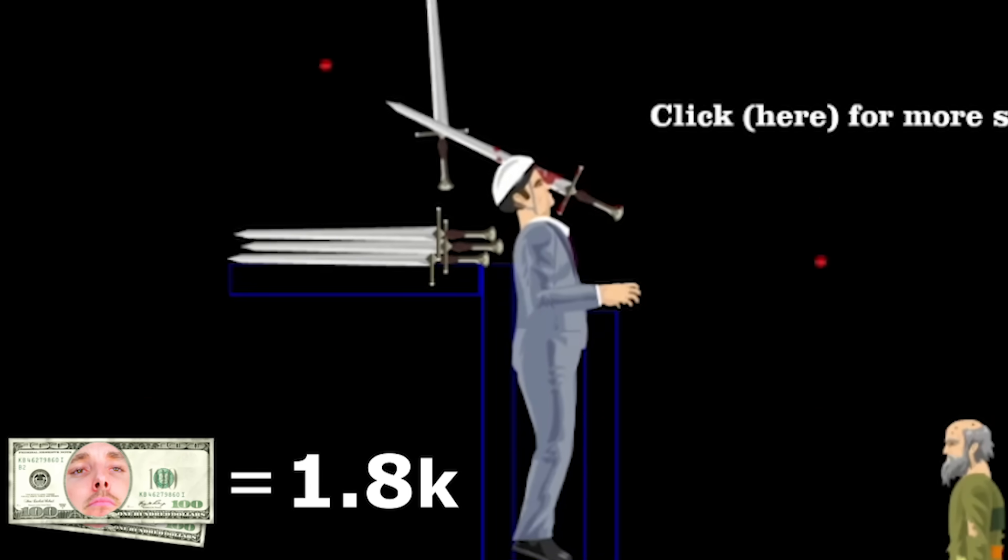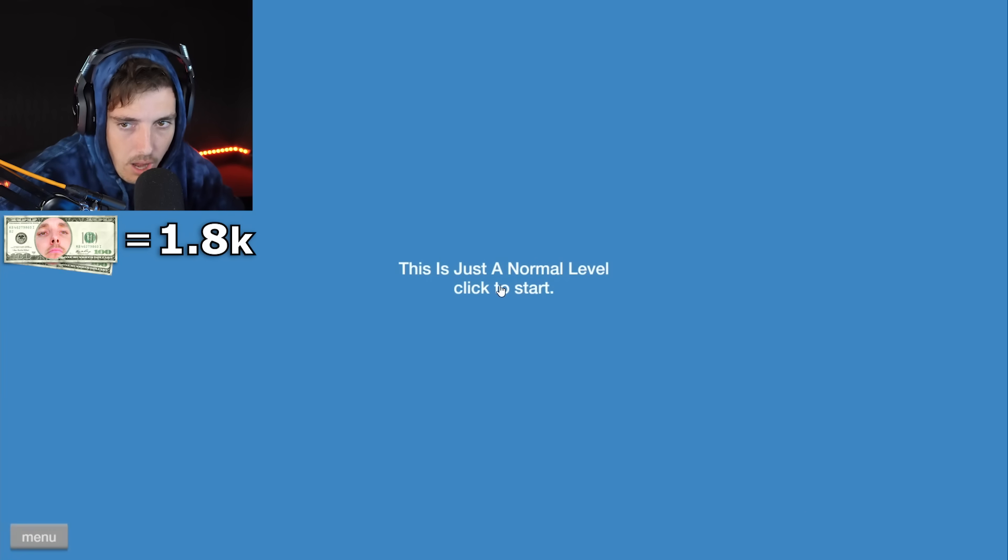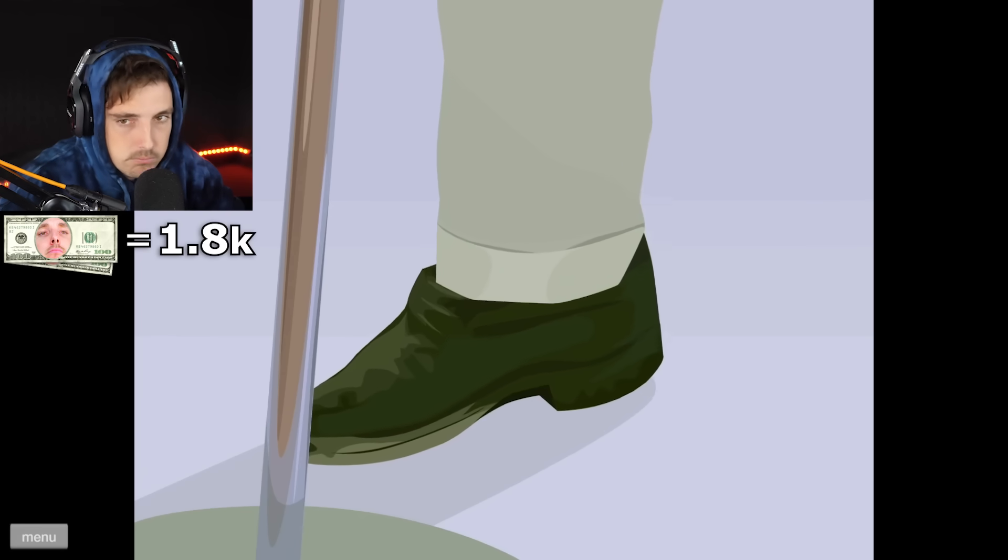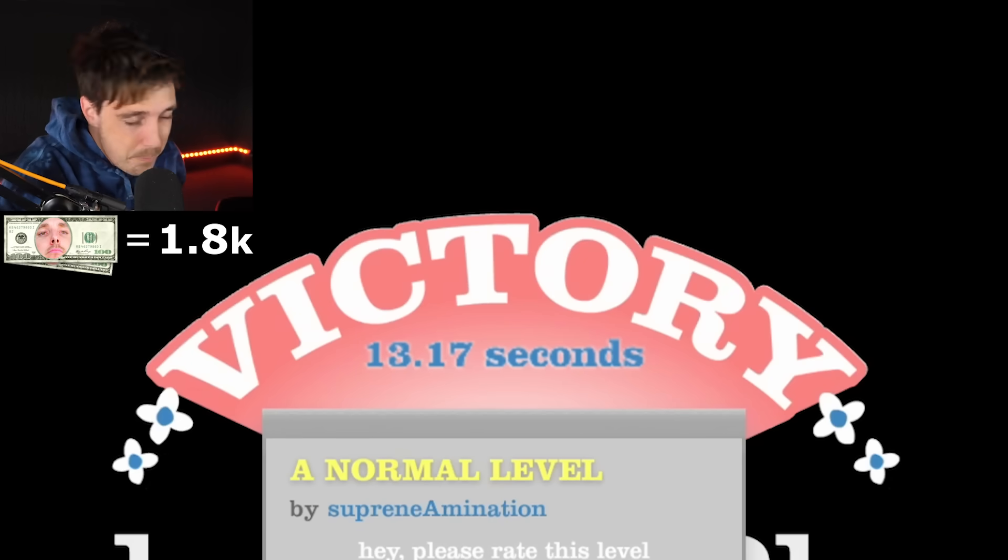Hundred bucks for charity. A normal level, just try to win. This is just a normal level. Click to start. You know, I just got Rick rolled on Happy Wheels. You know what, it says victory but I feel like I just took an L.